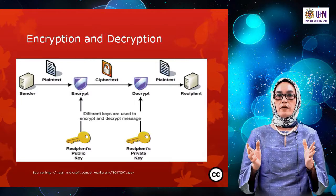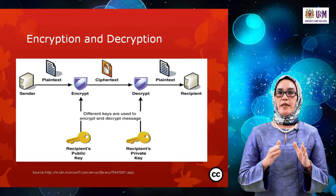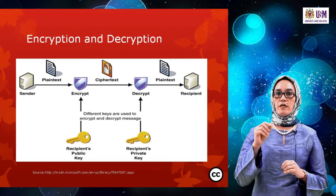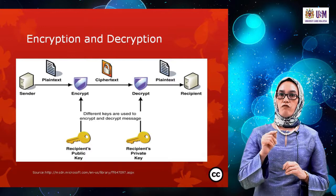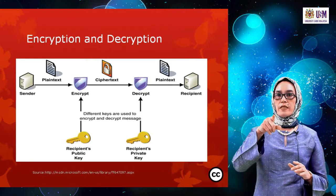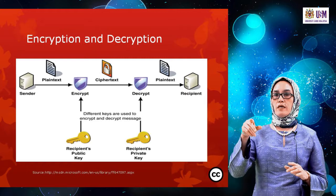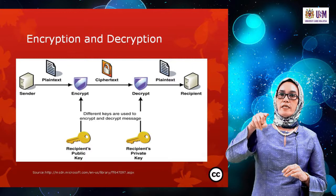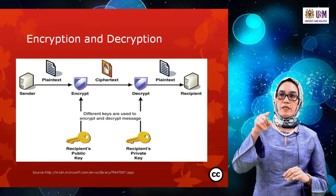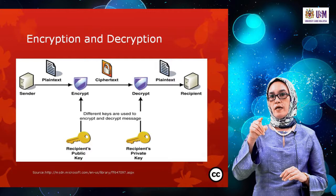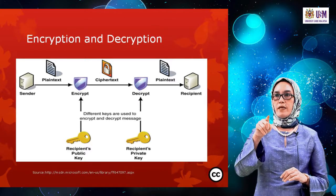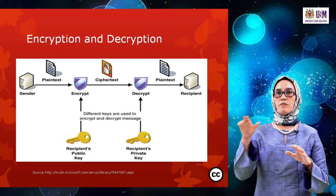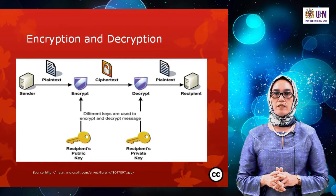Look at this picture. When a sender sends plain text, it will encrypt the text by using the recipient's public key to form ciphertext. From the ciphertext, when sent to the server, it becomes decrypted. Once decrypted, the user has to use another private key to decrypt it to form plain text to the recipient. This is how the process of encryption and decryption takes place.